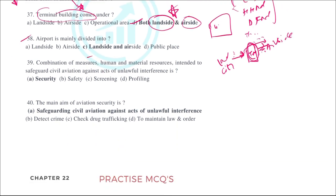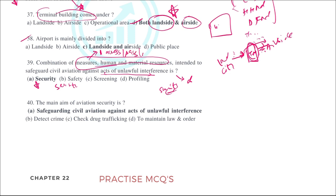The combination of measures, human and material resources, to safeguard against acts of unlawful interference is the definition of security. Material resources include X-ray, ETD, HHMD, and DFMD equipment. Human resources include security personnel like CISF. Using a combination of all these, we control and prevent acts of unlawful interference.